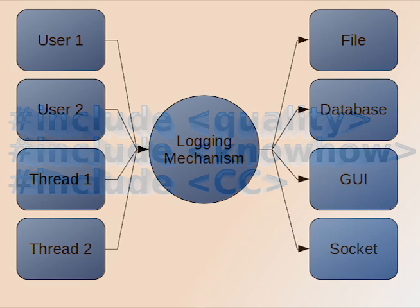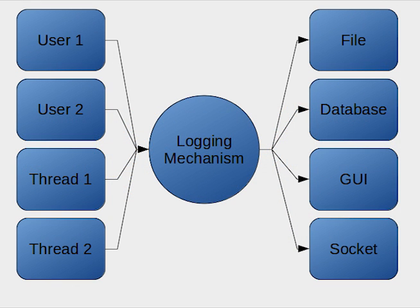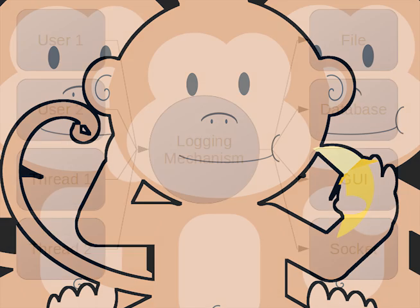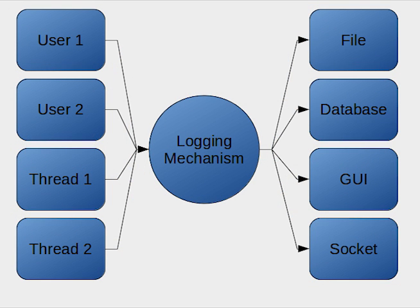This size application might have multiple methods of storing logging information, or it might have multiple places the information is produced. On projects created on a large scale, there's usually multiple people working on the project. These consumers could either be writing the messages to the console, displaying it on some GUI component, storing it in a database, or even streaming the info over a network socket.